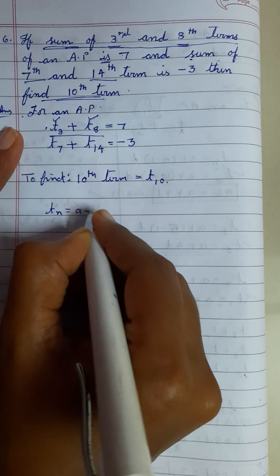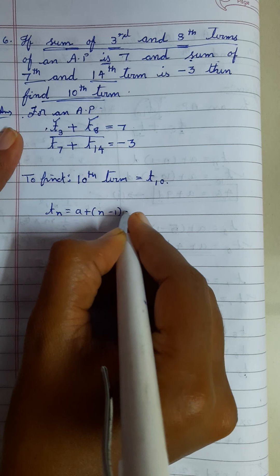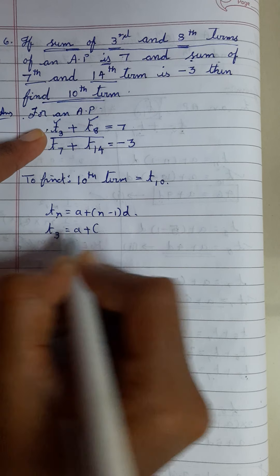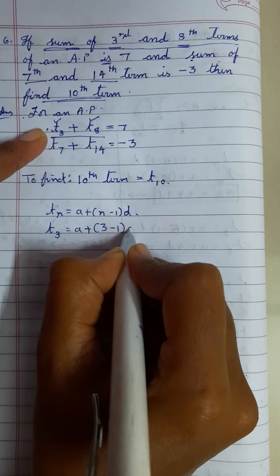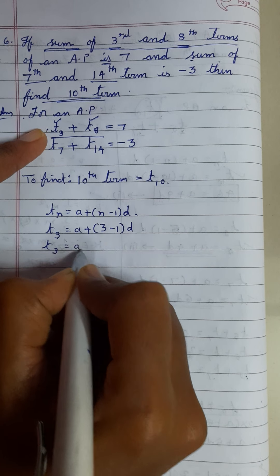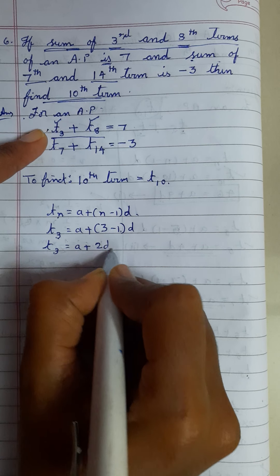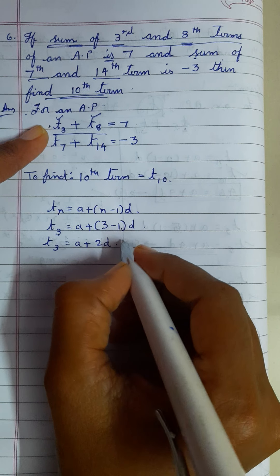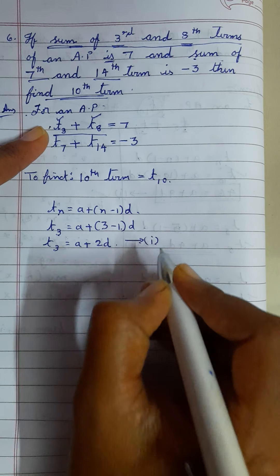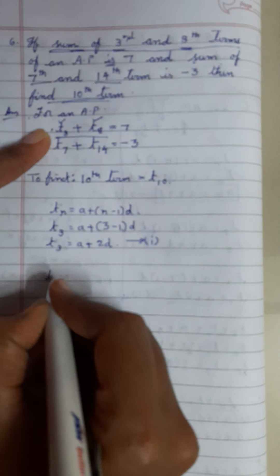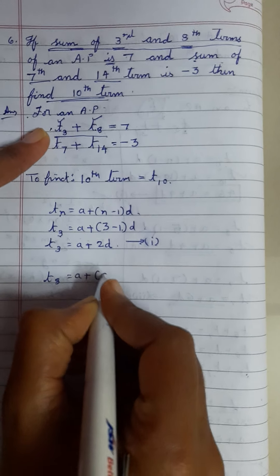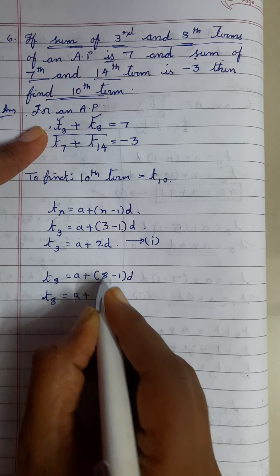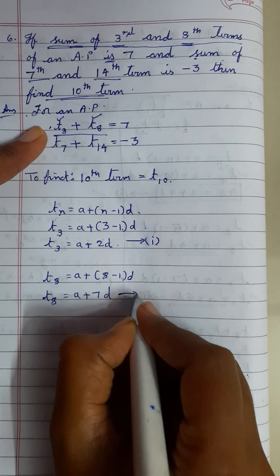The formula is Tn = A + (N - 1)D. So T3: N is 3, therefore T3 = A + (3 - 1)D = A + 2D. This is equation 1. Next, T8 = A + (8 - 1)D = A + 7D. Consider this as equation 2.